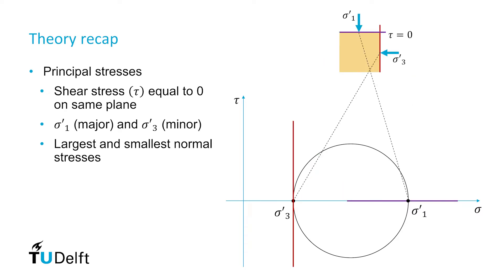Two special stress conditions exist where the shear stresses equal zero. These are called the principal stresses, and the orientation of the planes on which these principal stresses act will be two orthogonal planes, shown here for a triaxial test. The largest stress is the major principal stress, sigma 1, and the smallest is the minor principal stress, sigma 3. These stresses are also the biggest and smallest normal stresses present in the material, and they define the diameter of the Mohr's circle and do not change for a specific example.